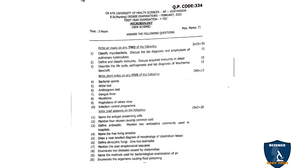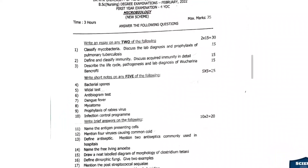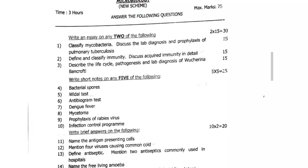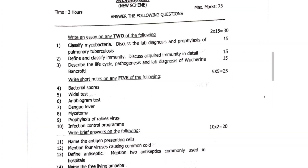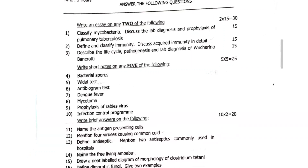Next question paper is Microbiology, February 2022. Classify mycobacteria and discuss the lab diagnosis and prophylaxis of pulmonary tuberculosis — 15 marks. Define and classify immunity, discuss acquired immunity in detail — 15 marks. Describe the life cycle, pathogenesis and lab diagnosis of filaria — 15 marks.